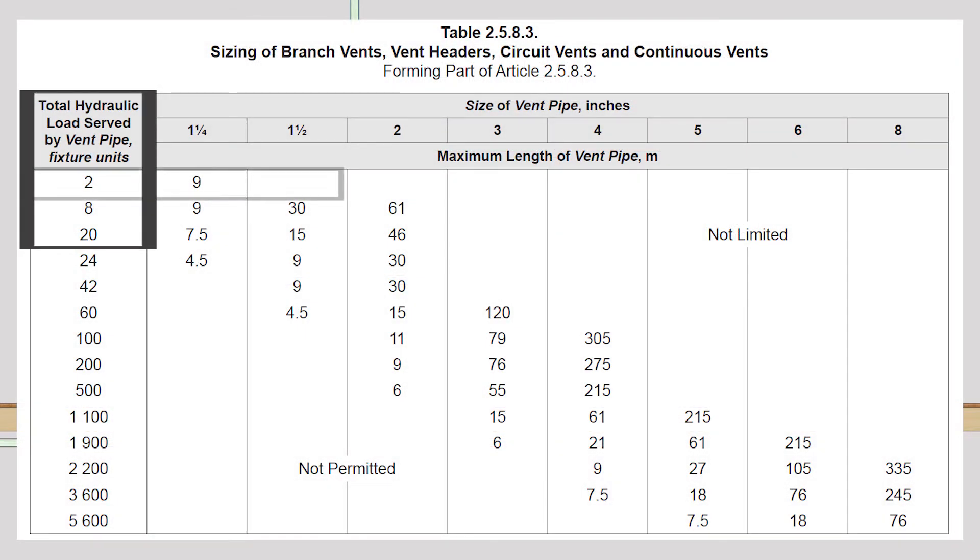So I look at table 2.5.8.3. I come down to two fixture units and I go across to the right, and I will find out that an inch and a quarter branch vent will serve two fixture units with nine meters of developed length. So we're actually good to go.